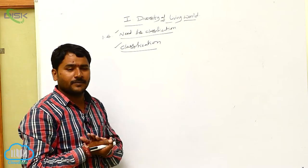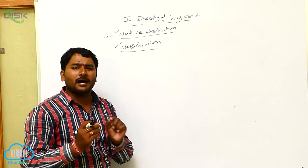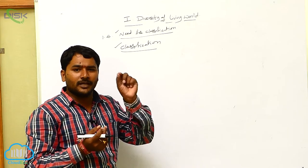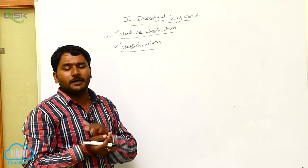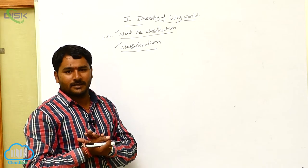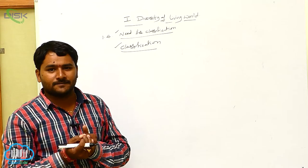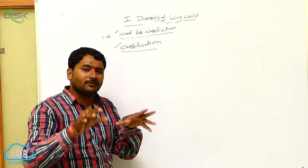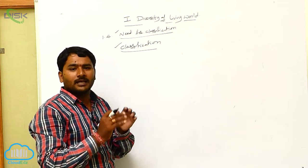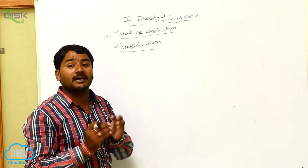Classification is a process by which anything can be divided into convenient groups by the observable simple characters. For better understanding, to understand all the living organisms, we have to divide them into groups or categories.